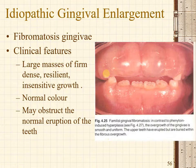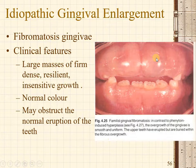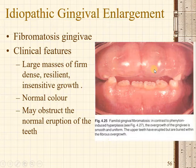Another reason for gingival enlargement is unknown cause, also called elephantiasis gingivae or fibromatosis gingivae. Contrary to drug-induced gingival enlargement, you will see a shiny surface with loss of stippling. The gingiva will look normal in color, but the gingival enlargement may be so extensive that the tooth is impeded from erupting.